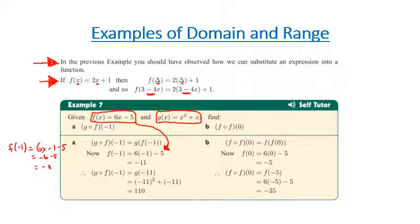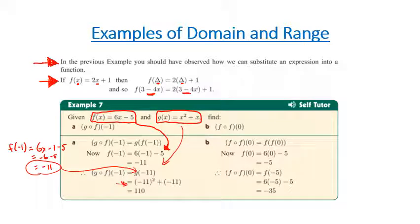We've now got f of negative 1 equals negative 11. So now all we're going to do is substitute that negative 11 into our g function. We end up with negative 11 squared plus negative 11, which becomes 121 take 11, which therefore gives us 110. So we're working out one function by substituting, getting our answer, then putting it into the other function.